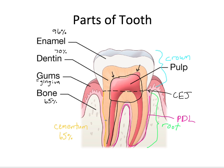One other structure: the tip of the root is called the apex. Going back to directional terms, if something is located in the direction toward the apex, we call that the apical direction. Whereas if we're moving toward the top of the crown, we call that coronal.